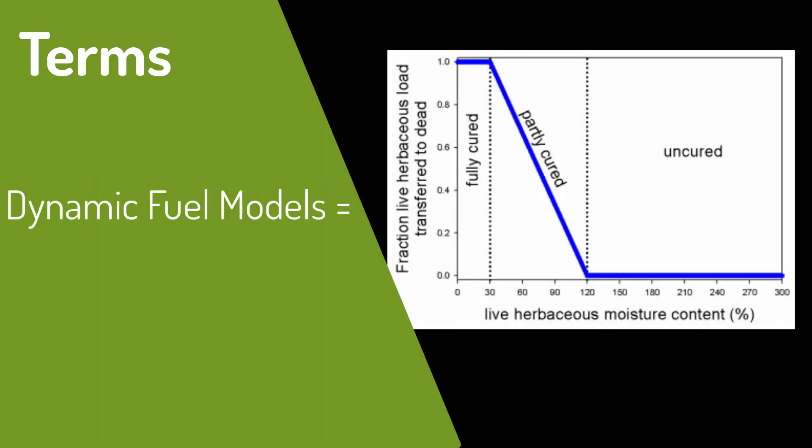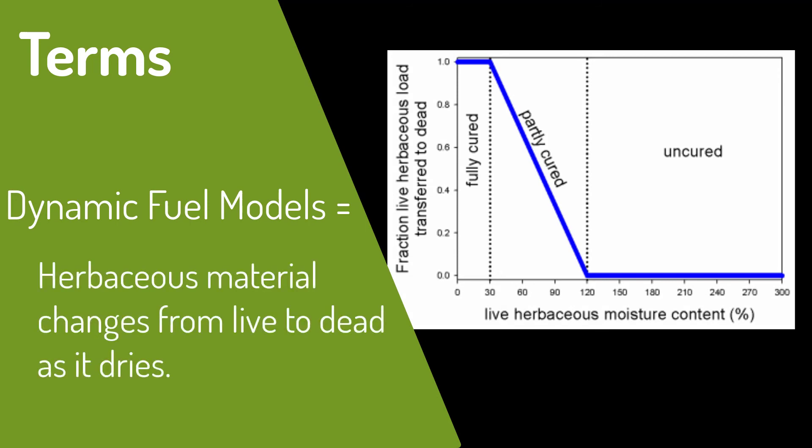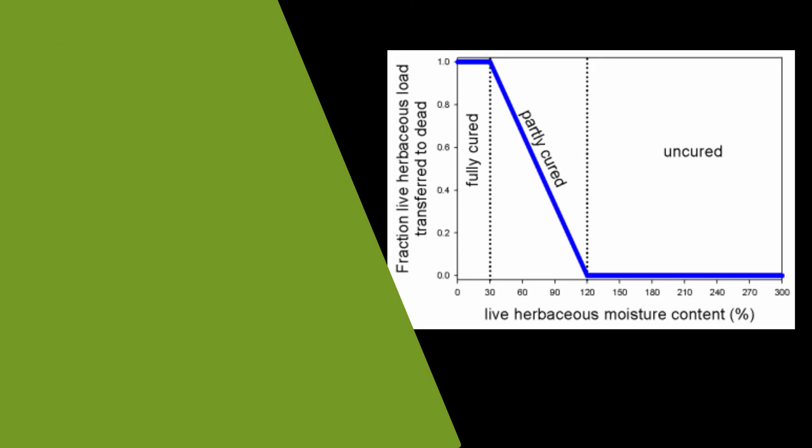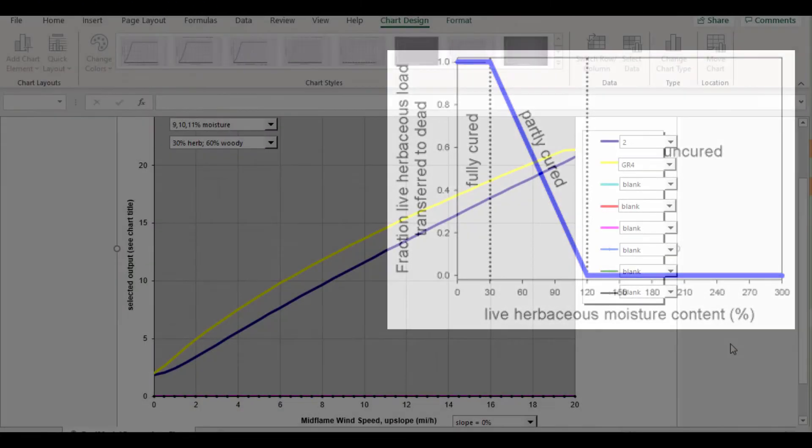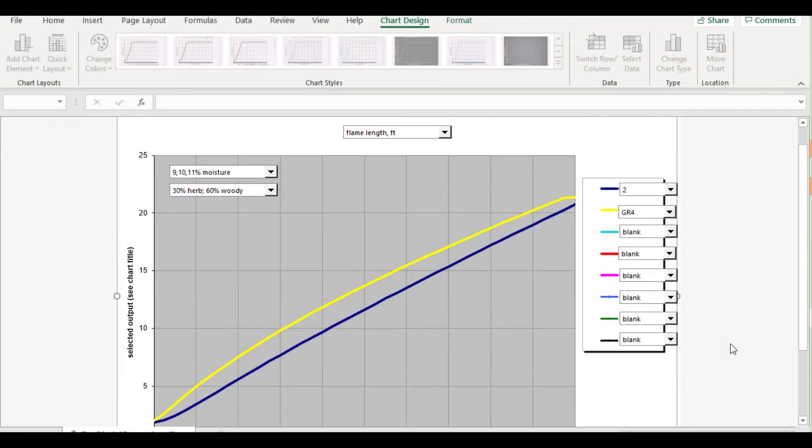Dynamic fuel models are fuel models that change as their moisture changes. When a fuel model contains herbaceous material and that herbaceous material dries out, it's moved into the dead category and treated just like it would be in peak summer conditions. When that fuel moisture increases, the fire behavior modeled for that fuel model changes as well to respond to that increased moisture. Let's demonstrate this by looking at two similar fuel models.